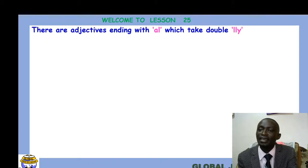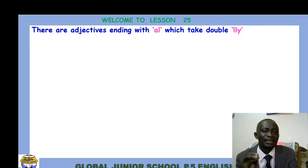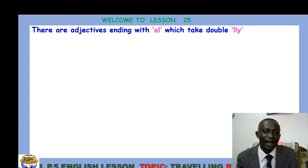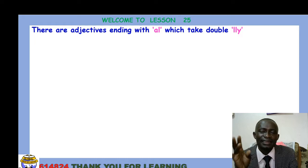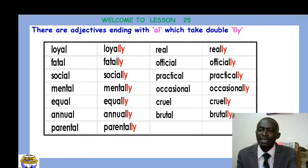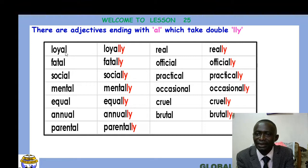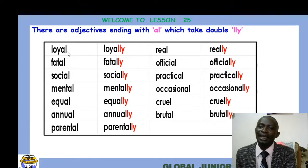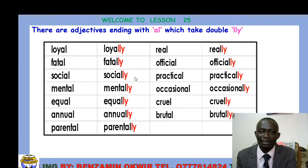The instruction says: there are adjectives ending with '-al' which take a double letter 'l' and add 'y'. They already have 'l' at the end; we just add one more 'l' and then 'y' to form the adverbs. Take a look at the word 'loyal' — it already has 'a' and 'l' at the end, so we add one more 'l' and 'y' to get 'loyally'. Similarly, 'fatal' becomes 'fatally' and 'social' becomes 'socially', 'practical' becomes 'practically'.